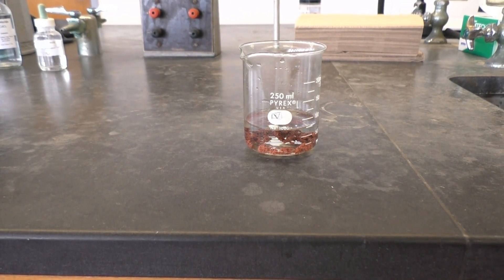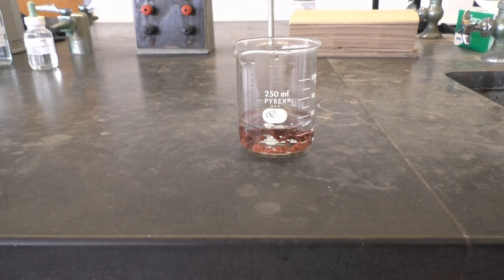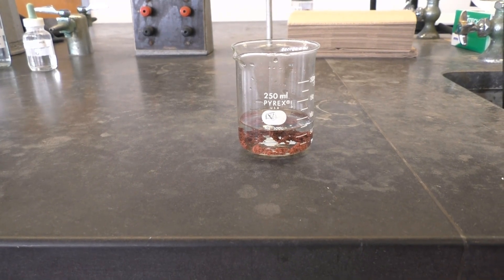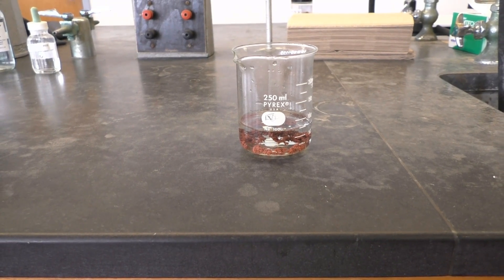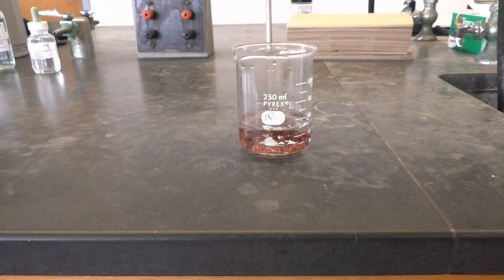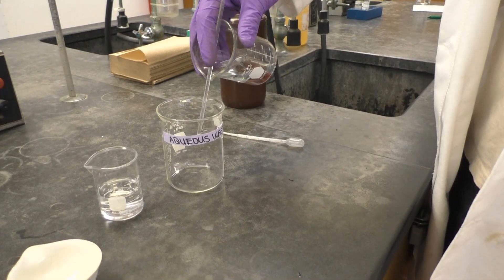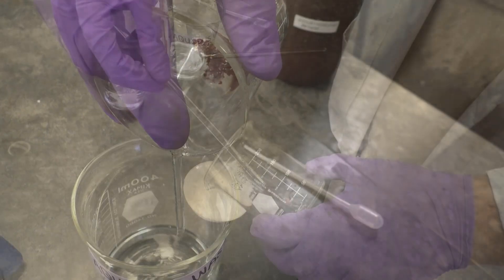Alright! You're finally ready to isolate and dry your final copper product. You'll do this by getting it all into your evaporating dish and then dry it over a steam bath. First, you can decant off the solution from your copper into a waste beaker.